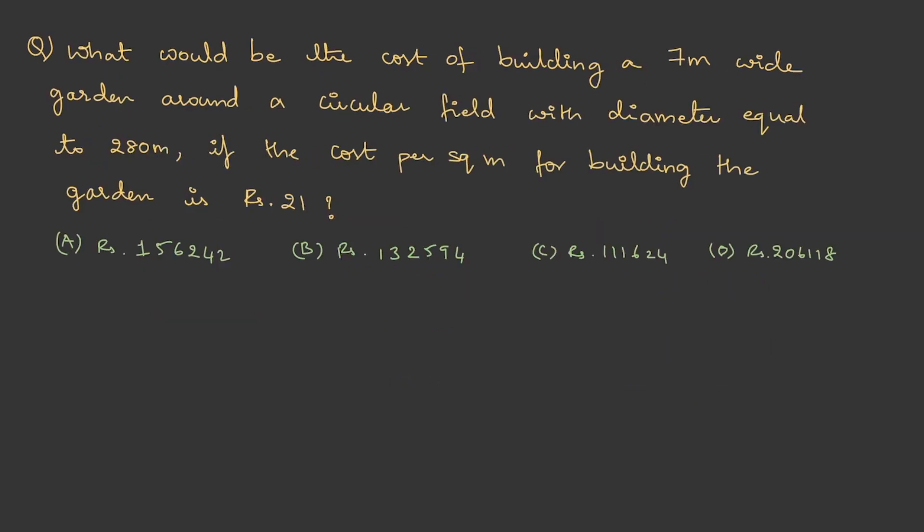Let's do one more question. What would be the cost of building a 7-meter wide garden around a circular field with diameter equal to 280 meters, if the cost per square meter for building the garden is ₹21? To understand this, let me draw a diagram.